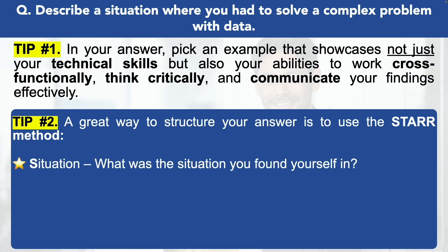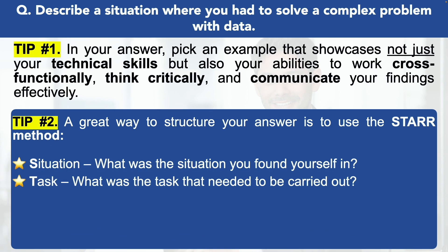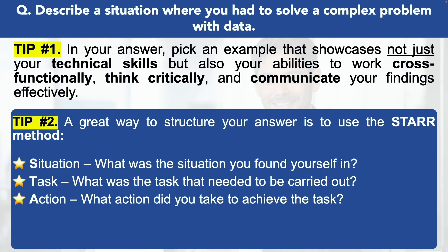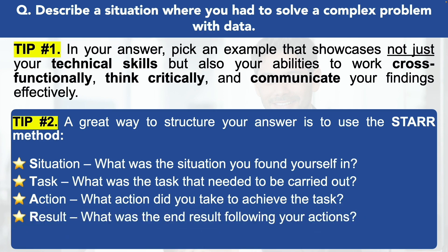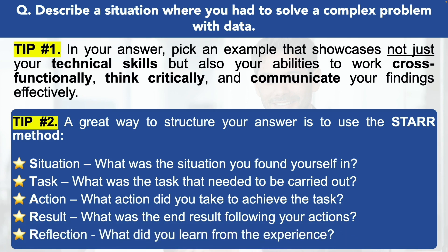The STAR method stands for: S is for Situation — start your answer by describing the situation you found yourself in. T is for Task — what was the task that needed to be carried out? A is for Action — what action did you take to achieve the task? R is for Result — what was the end result following your actions? Make sure it's a positive end result. And the final R is for Reflection — what did you learn from the experience? That's a really valuable thing to add into your answer.